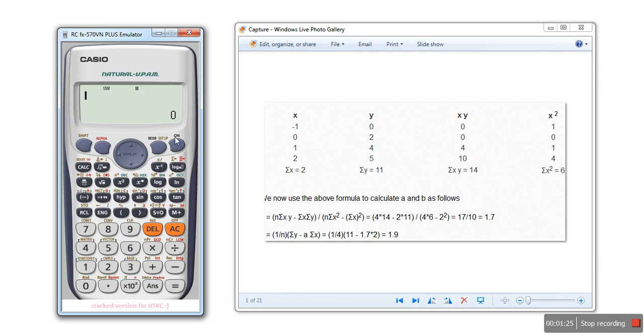Now we want to calculate the values of a and b. Press the shift key and press 1, which will give you a menu. We will select regression by pressing key 5.